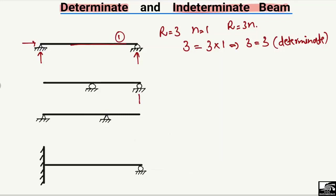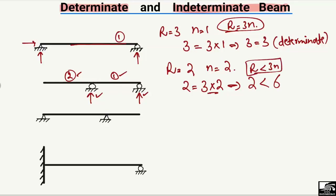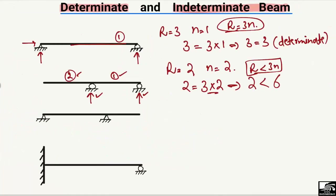In the second beam, there are two roller supports — each providing one vertical reaction — so r equals 2. There are two members, so n equals 2. Applying the formula: r = 3n → 2 vs. 3 × 2 = 6. Since 2 is less than 6, r is less than 3n, which means this is an unstable beam. We must provide additional supports to increase the stability of this beam.